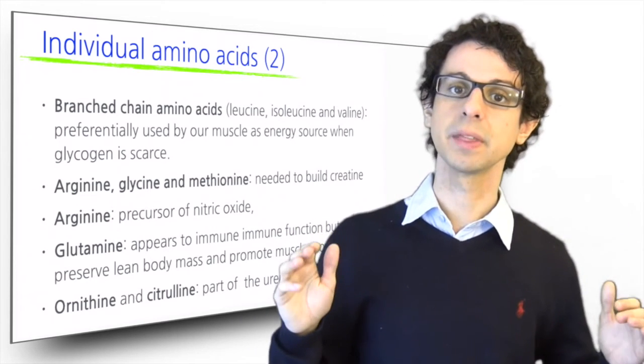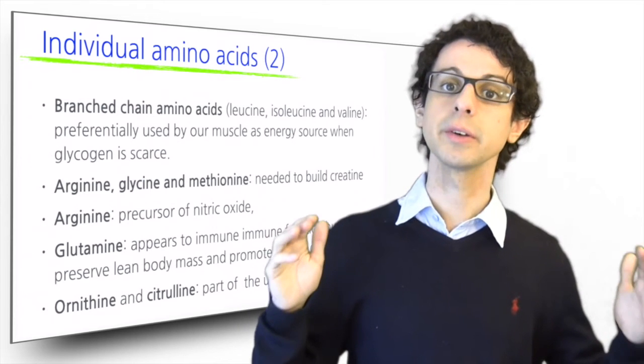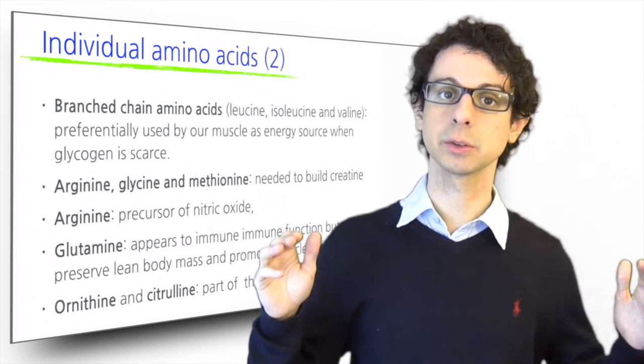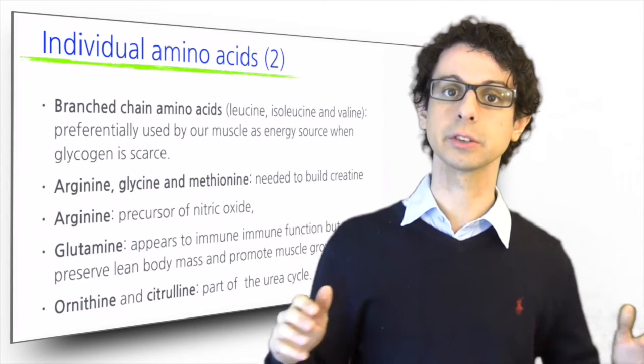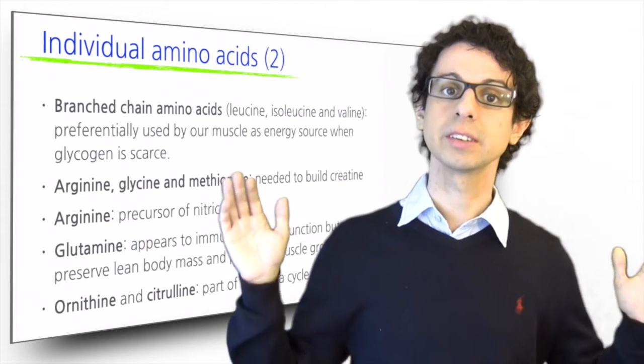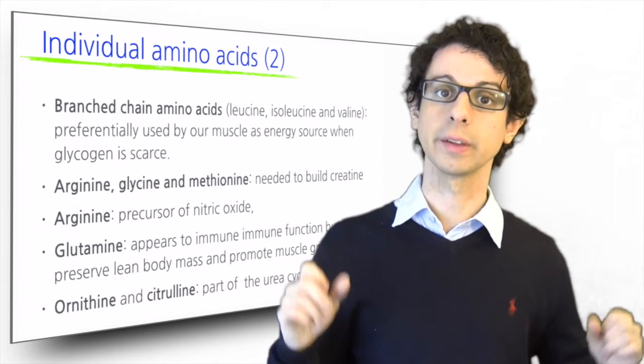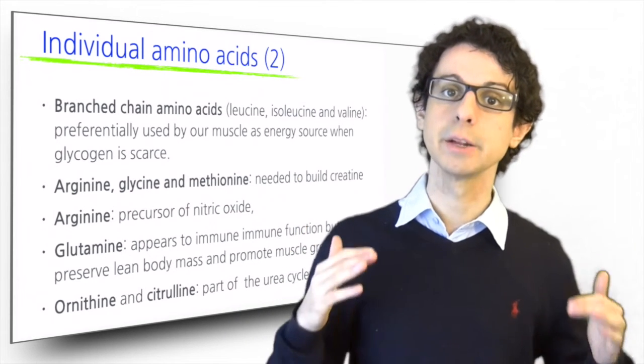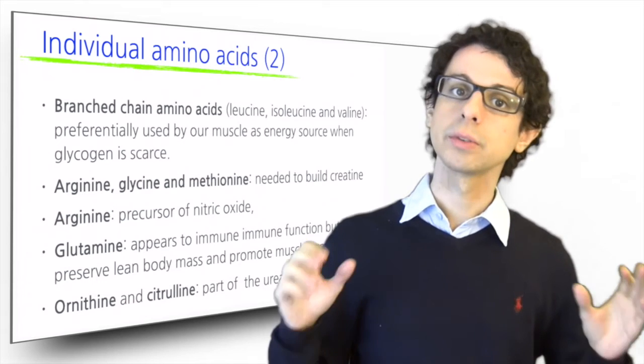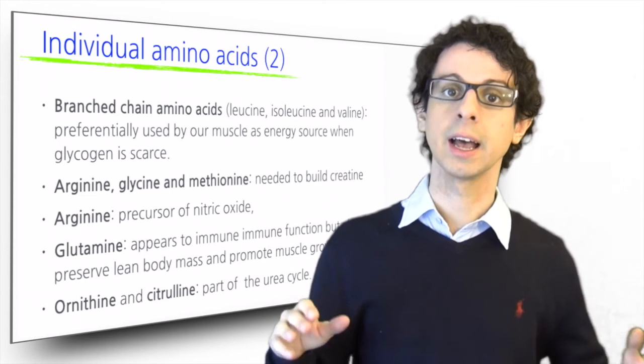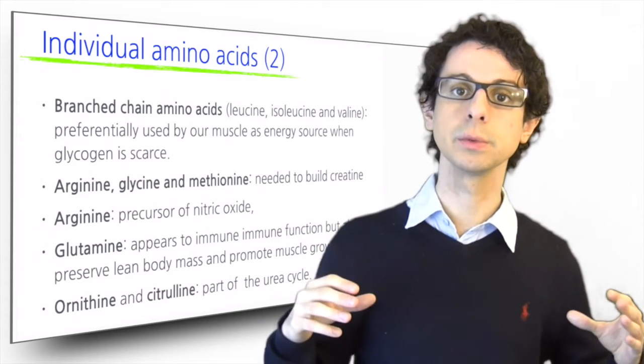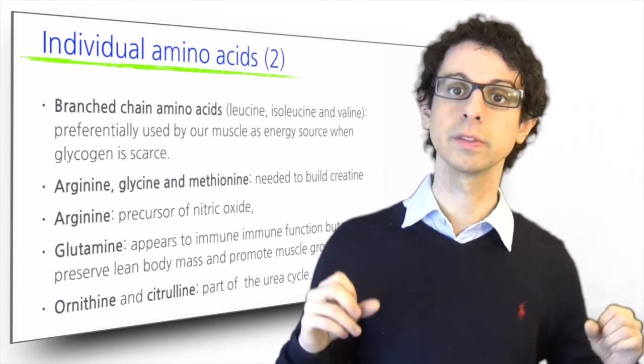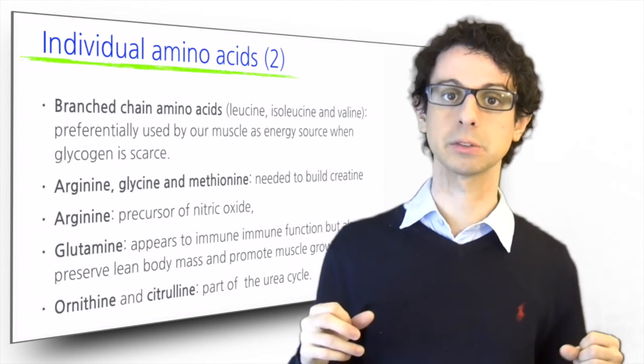Arginine, glycine, and methionine are needed to build creatine, a quick backup source of energy in our cells. Arginine is also a precursor of nitric oxide, which has a vasorelaxant effect on our blood vessels thus lowering blood pressure and improving blood flow. For this reason, it is often marketed as sports supplements as well as glutamine, which appears to boost immune function, but also preserve lean body mass and promote muscle growth.